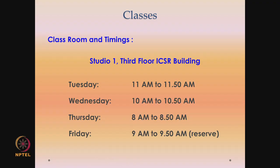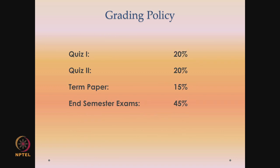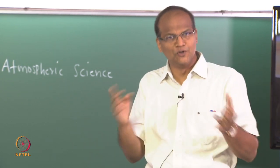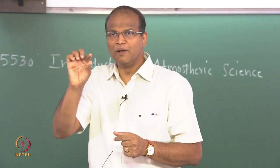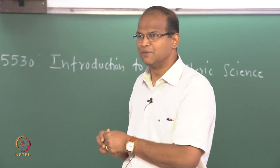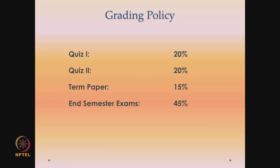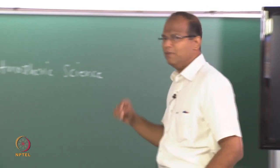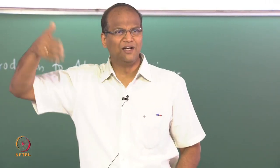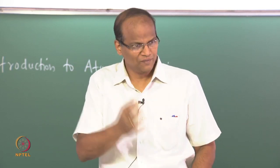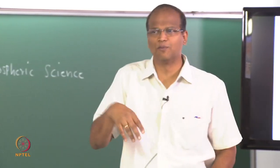The grading policy: Quiz 1 is 20%, Quiz 2 is 20%. You will present a term paper in groups of 2 or 3 — I will give you topics to choose from, you present, and everyone will be there to evaluate. That is 15%, and the end semester exam is 45%. All quizzes and end semester will be open notes. Please bring calculators to every class because every class we will be working out problems.